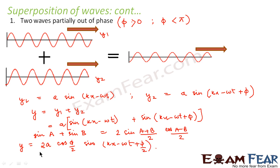So in this expression, the amplitude of the resultant wave is 2a cos(φ/2). When the two waves were in phase (φ = 0), the amplitudes added up. When completely out of phase (φ = π), the amplitude was zero. In the partial case, the amplitude is 2a cos(φ/2), and the phase of the resultant wave is φ/2. Depending on the exact phase difference between the two waves, we get the corresponding resultant wave.